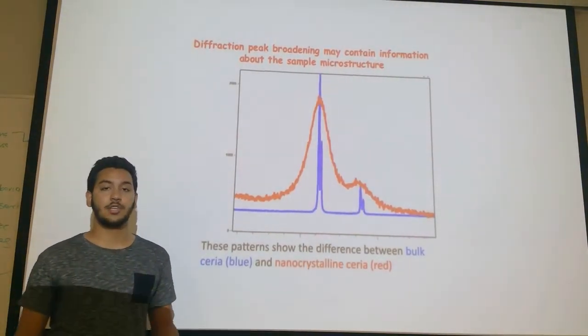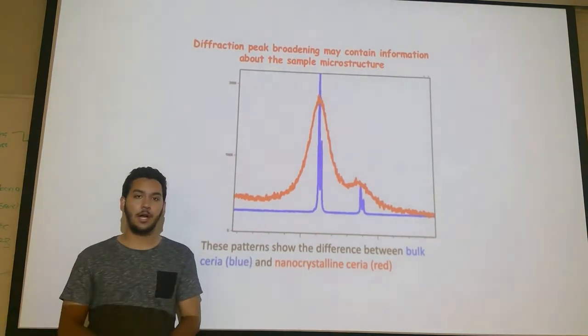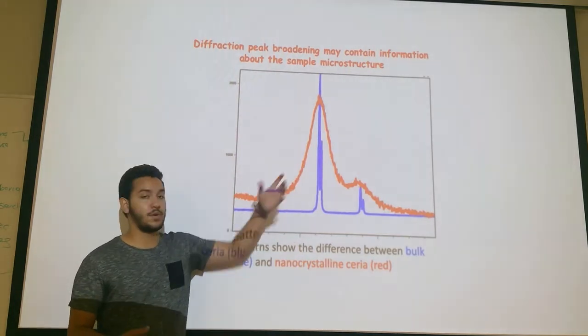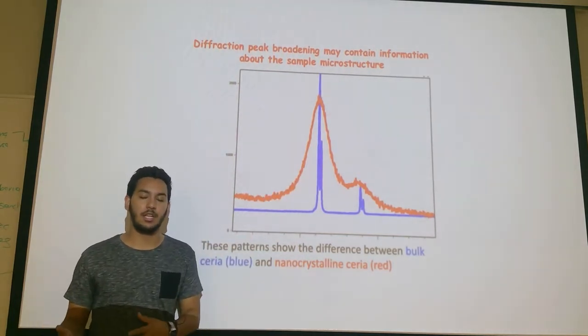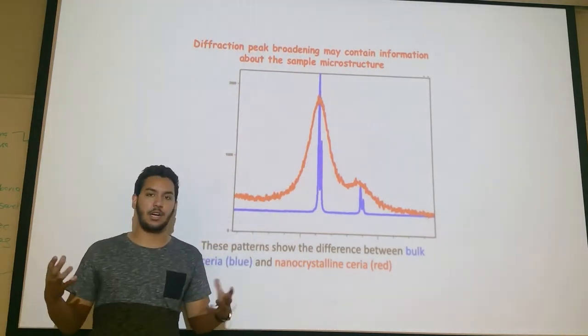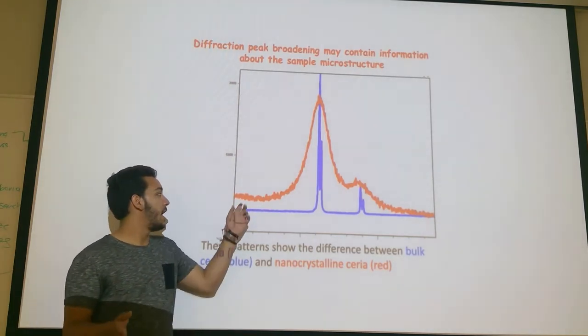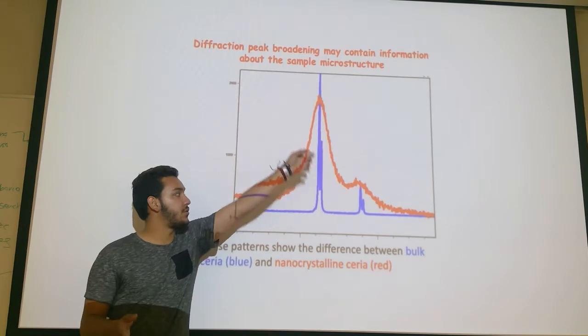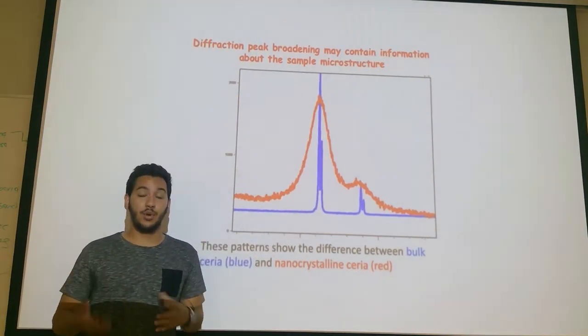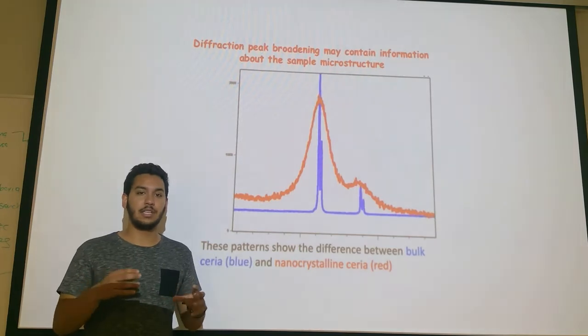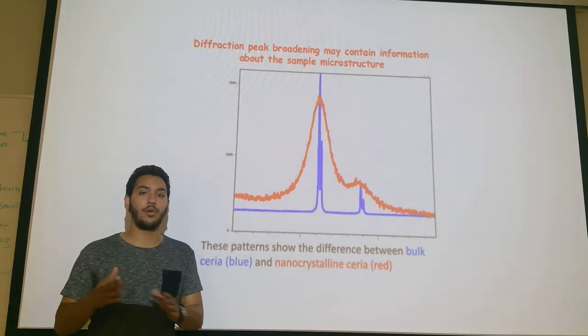We can start answering this question by looking at this plot. In this plot, you can see two types of diffraction peaks. The first one, in blue, is from a bulk solid, which is a big solid in the range of micrometers, not nanometers. And then we have this red diffraction peak, which is from a nanocrystal, like a little powder where we can see nanocrystallites that are in the order of nanometers.